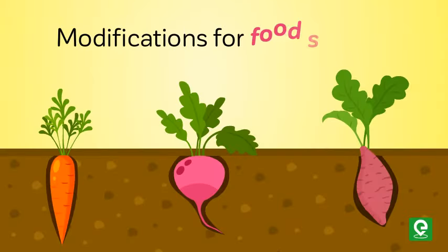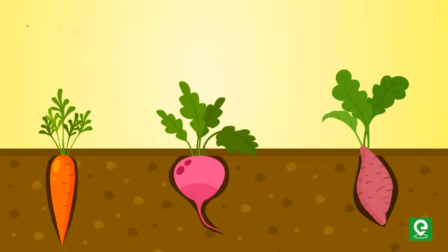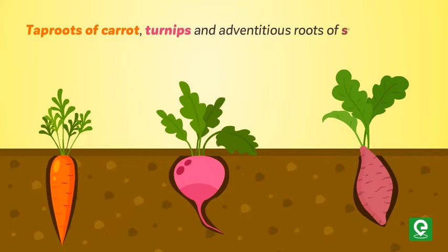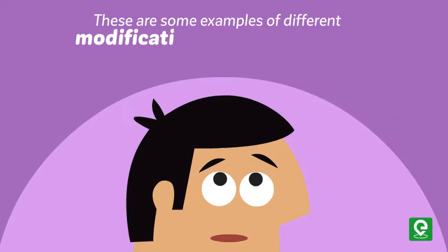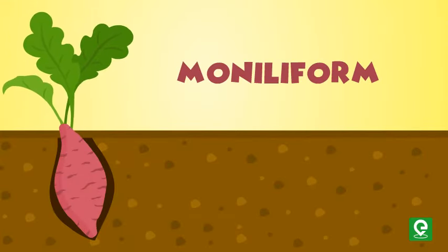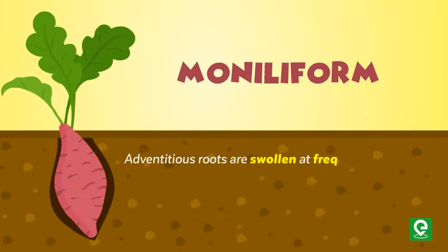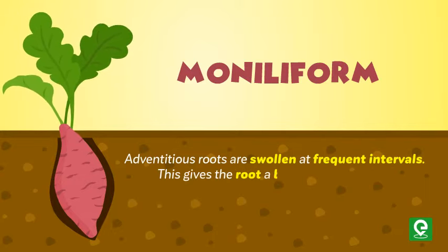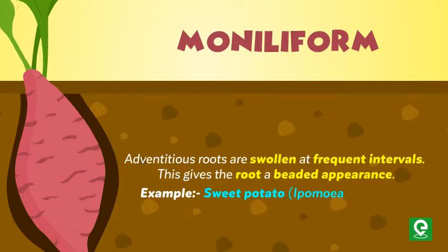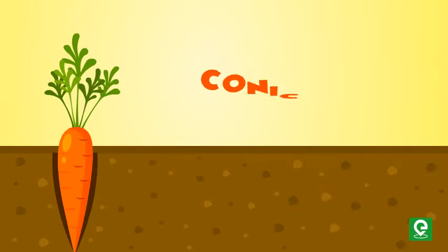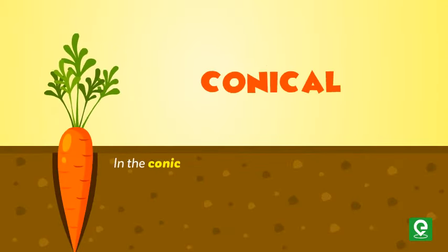Modifications for food storage: tap roots of carrot, turnips, and adventitious roots of sweet potato get swollen and store food. These are some examples of different modifications for food storage. Moniliform adventitious roots are swollen at frequent intervals — this gives the root a beaded appearance.